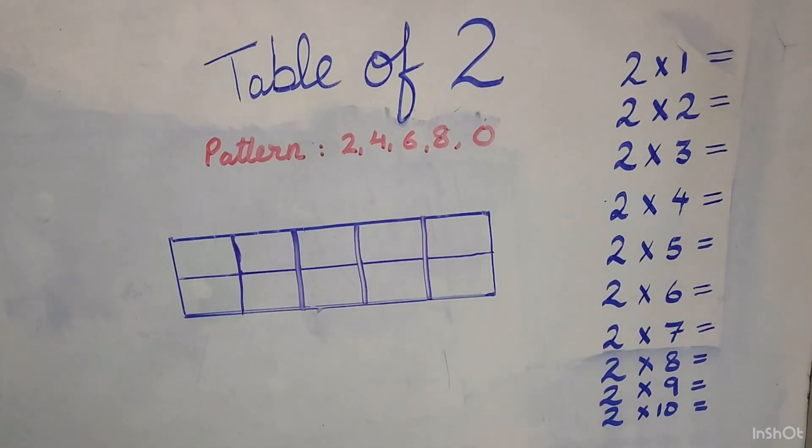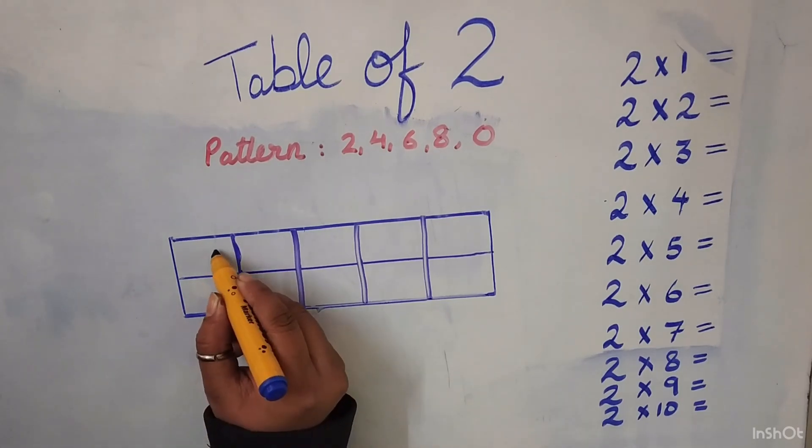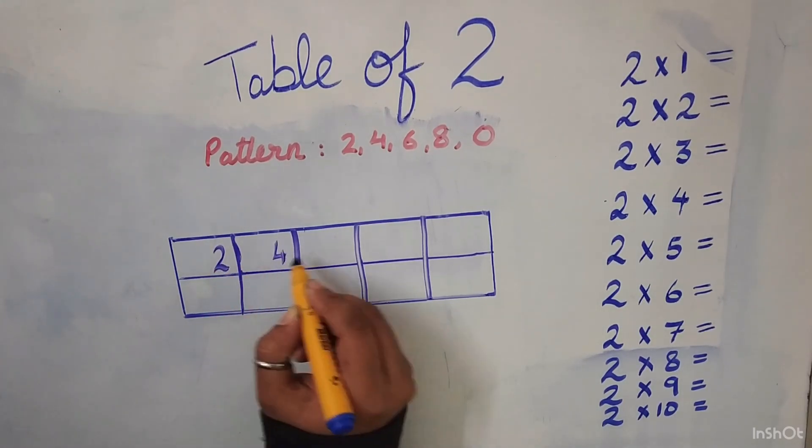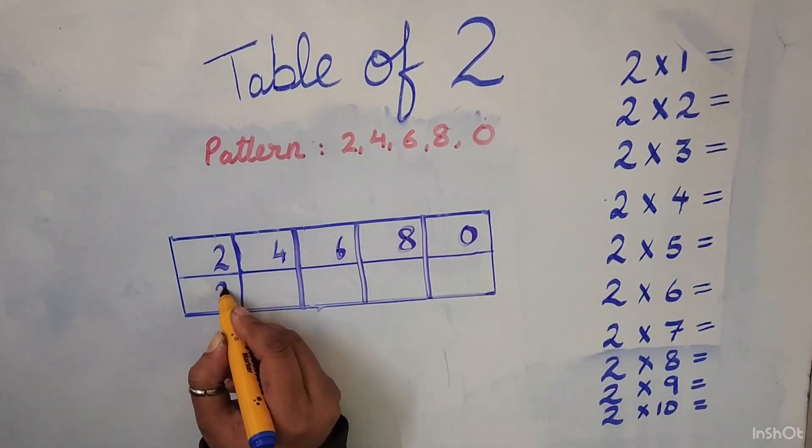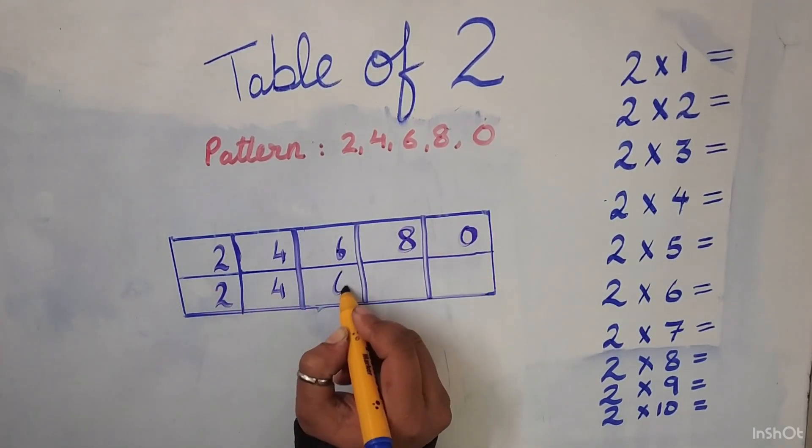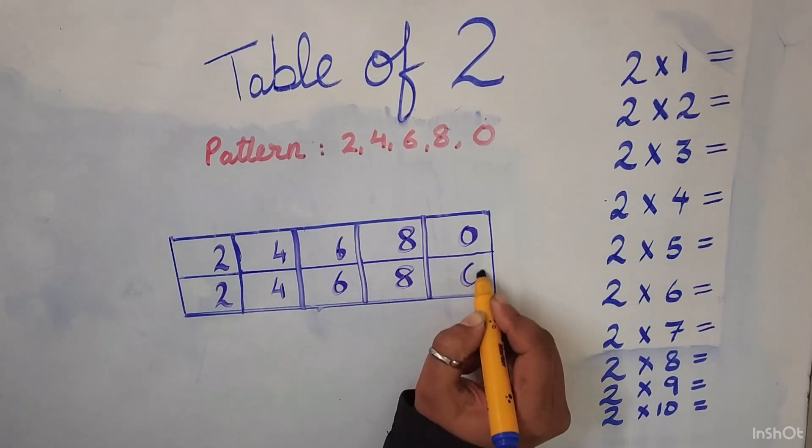Now we will fill in this pattern in the table below: 2, 4, 6, 8, 0. Again 2, 4, 6, 8 and 0.